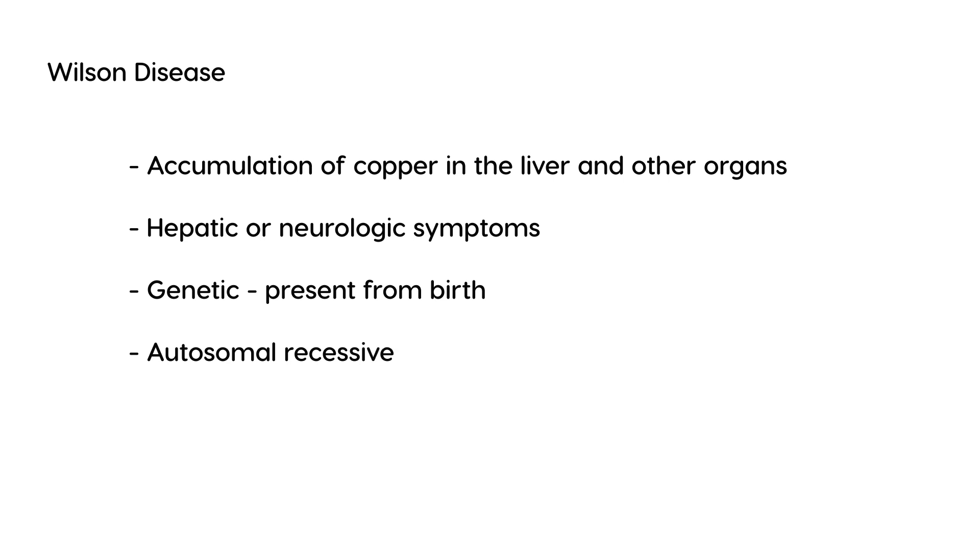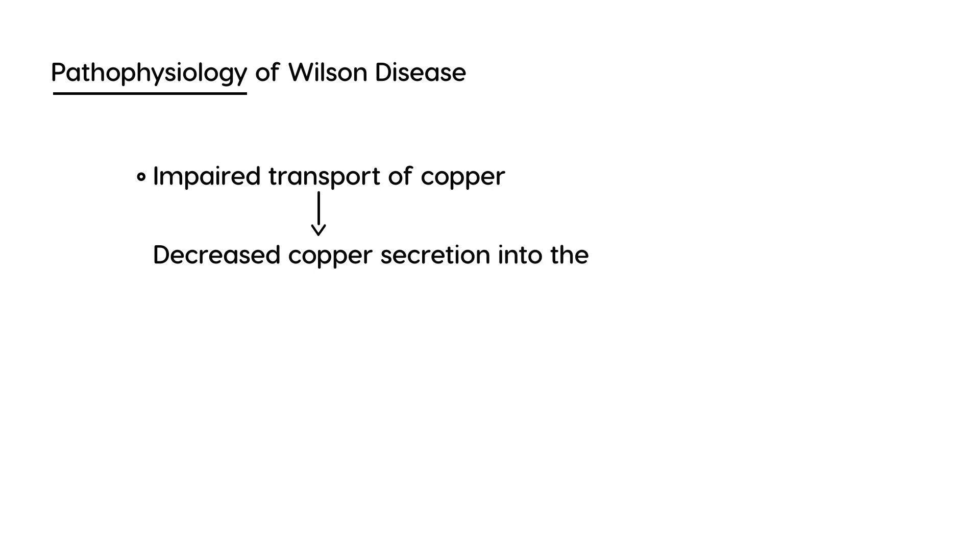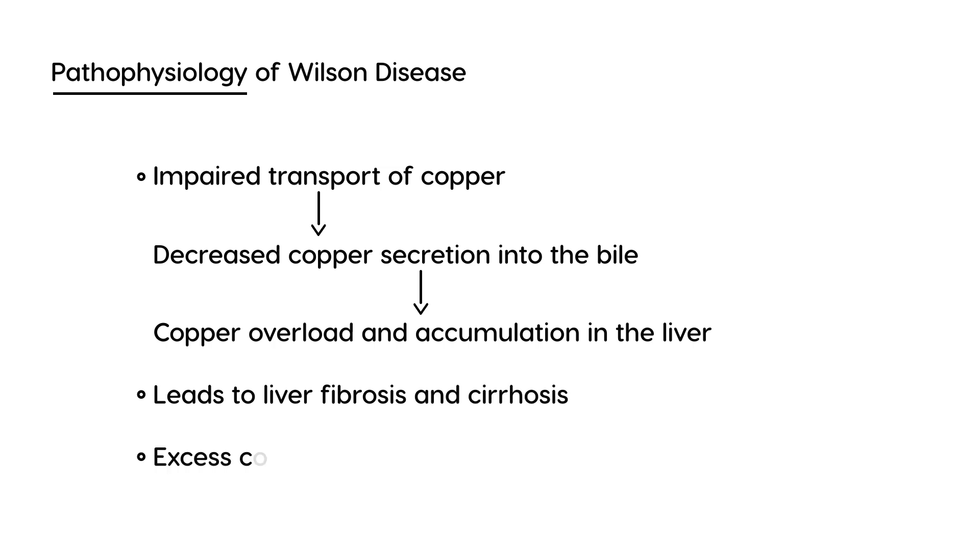What's happening in Wilson disease is impaired transport of copper. As a result, copper is not able to go into the bile, and this decreased copper secretion into the bile results in copper accumulating in the liver. This leads to eventual fibrosis and cirrhosis of the liver. Later, excess copper can go into the bloodstream and travel to other organs such as the brain and the eye.